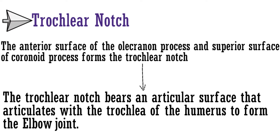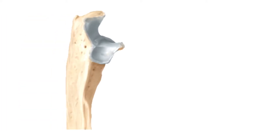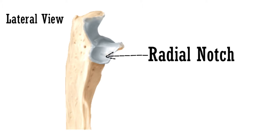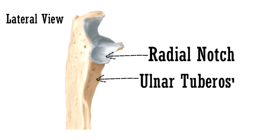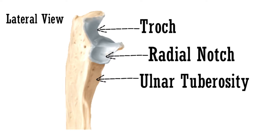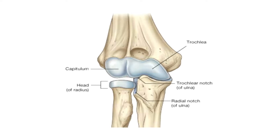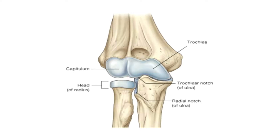Let's have a look at these parts. This is the lateral view of the proximal end of the ulna. This laterally present notch is the radial notch. This is the ulnar tuberosity, present on the lower corner of the anterior surface of the coronoid process. And lastly, there is the trochlear notch, which articulates with the trochlea of the humerus to form the elbow joint.